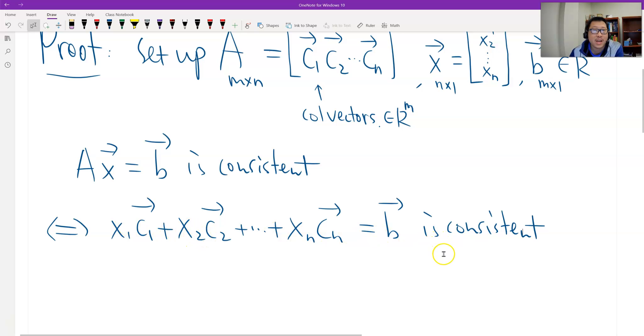Means x1, x2, the unknown exists, okay? What does this mean? This means the b vector is the linear combination of the column vectors, right?